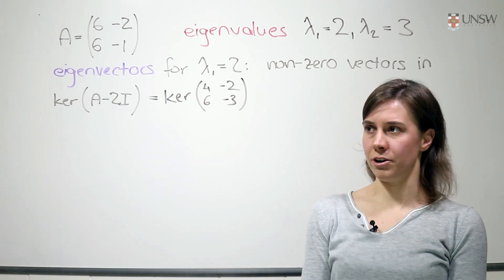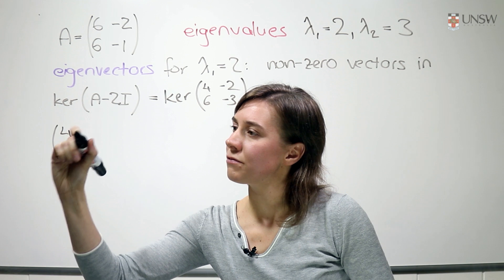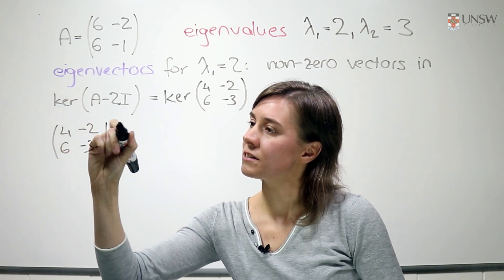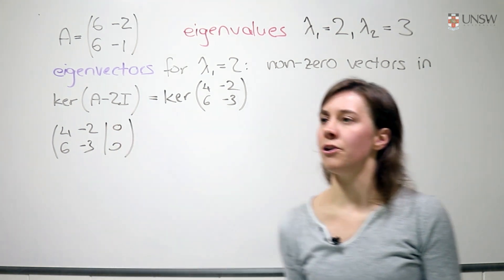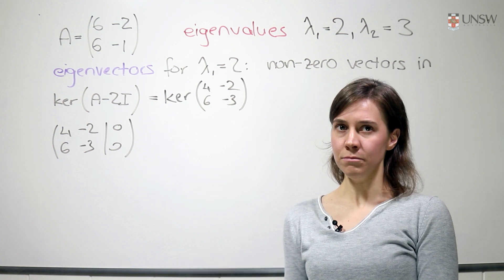So how do I compute the kernel of a matrix? Well, I solve the linear system 4 minus 2, 6 minus 3 and 0, 0 because the kernel means exactly those vectors who are mapped to 0, 0 by this matrix.